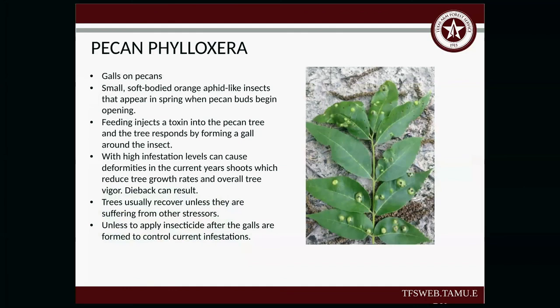Pecan phylloxera: these are galls on pecans caused by an insect that lays its larvae inside, and the tree responds by forming a gall around the insect. The feeding injects a toxin into the pecan tree and the tree forms a gall around it. With high infestation levels, it can cause deformities in current-year shoots, reducing the tree's growth rate and overall vigor, resulting in some dieback. Trees usually recover unless they are suffering from other stressors. When you see galls like this, your tree is going to survive — just try to minimize stressors. You can apply insecticide, but unless you get it in time, there's really no point.